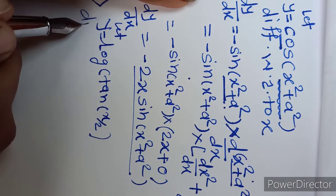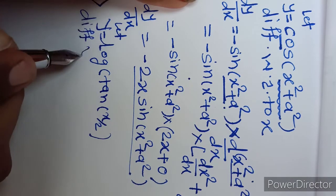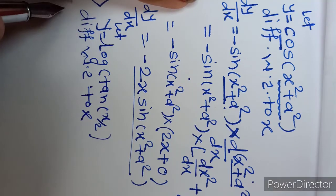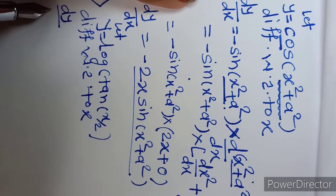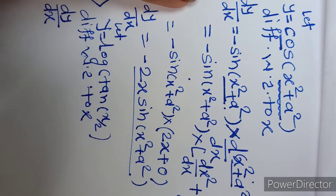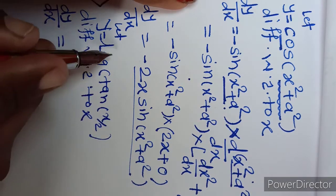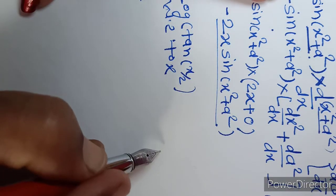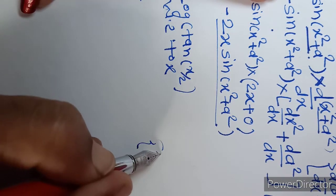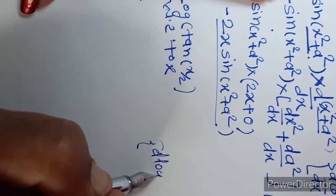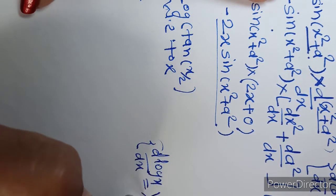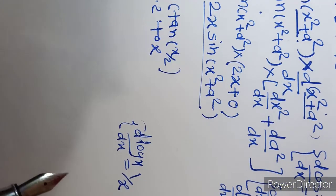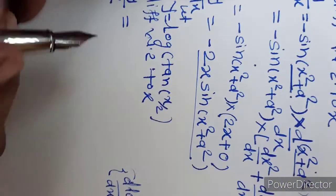The question is to differentiate this function with respect to x, so dy/dx. The outermost function here is log, so we use the log formula. The derivative of log x with respect to x is 1 upon x. If you haven't seen the formula video, please watch our first video which covers all formulas.